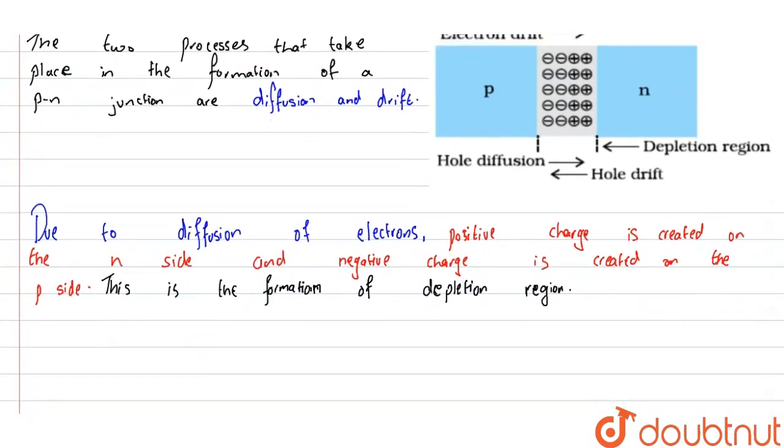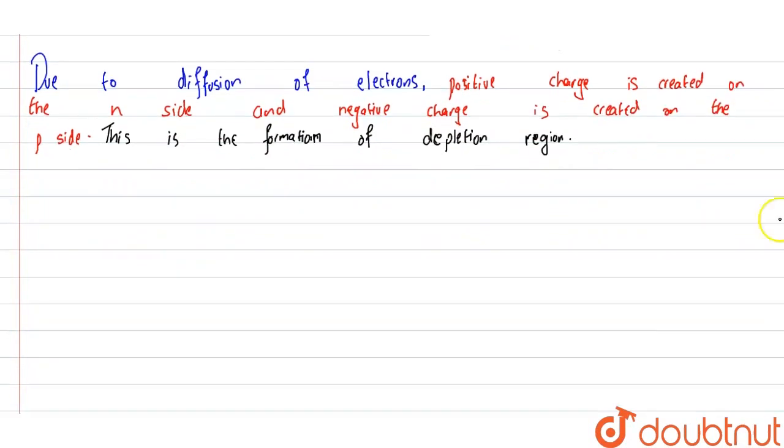Next, barrier potential is formed due to the loss of electrons from the N region and gain of electrons by the P region. Its polarity is such that it opposes the movement of charge carriers across the junction. Barrier potential is formed due to the loss of electron from N-type side and gain of electron on P-side.